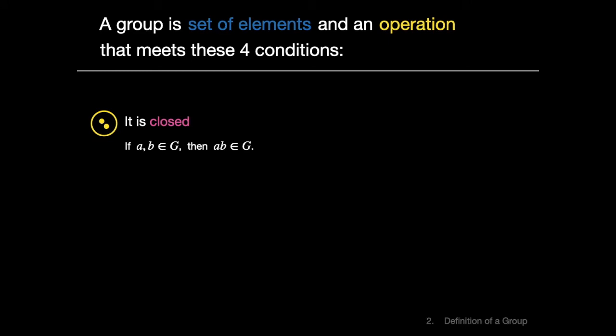If A and B are both elements of a group G, then their product under the group operation is an element of the group as well.